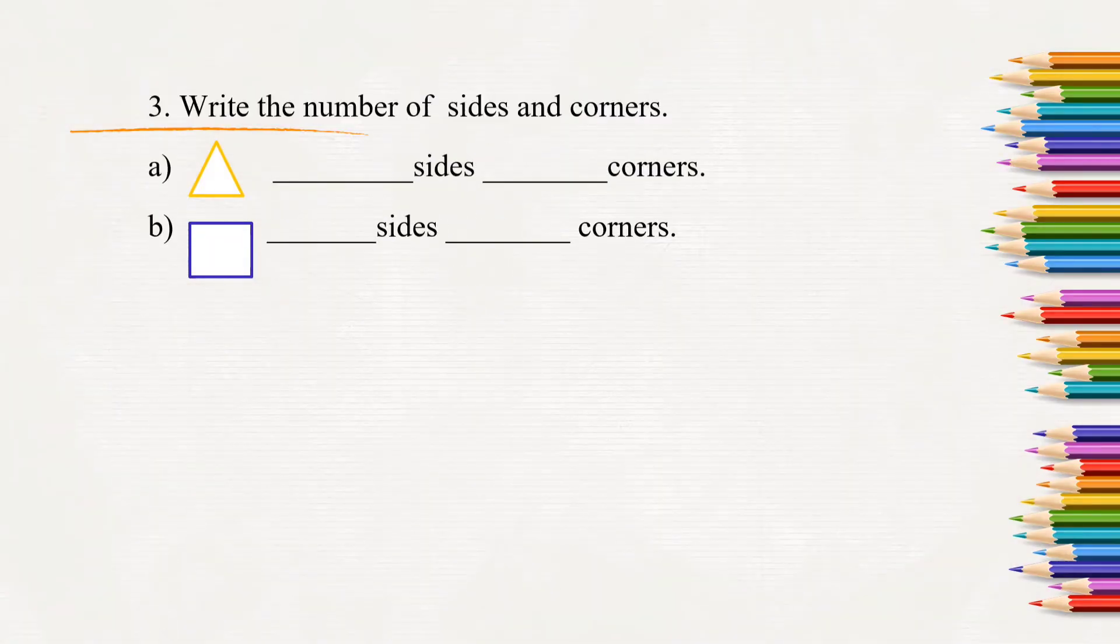Next question: write the number of sides and corners. How many sides will be there in triangle? 3 sides. And how many corners? 3 corners. In square, 4 sides and 4 corners.